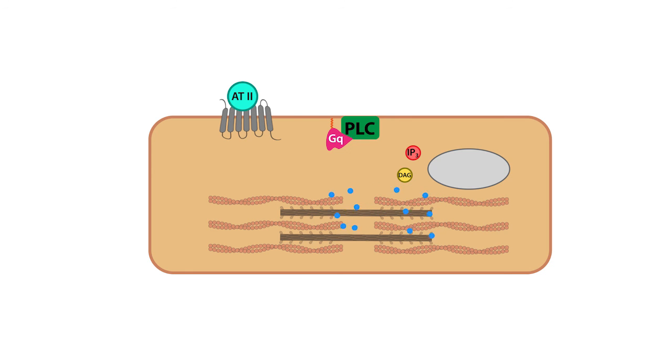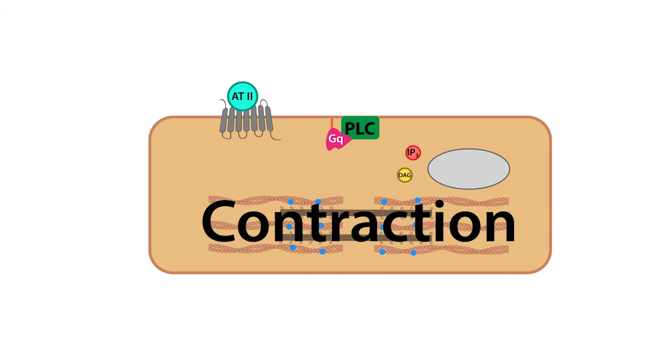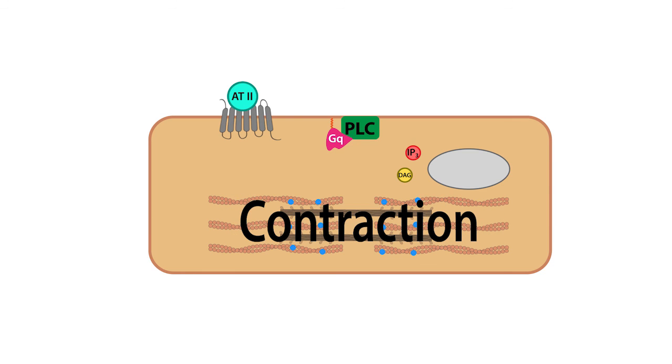Once released, calcium promptly binds the actin polymers and promotes contraction of the myofilaments, which results in the vasoconstriction of the afferent and efferent arterioles, as well as the contraction of the intraglomerular mesangial cells, both of which result in a reduction of GFR.